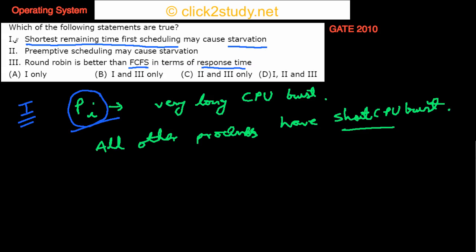This process PI is always waiting in the queue, never running on CPU. So yeah, that's starvation — this is definitely true. And preemptive scheduling may cause starvation — is that true?